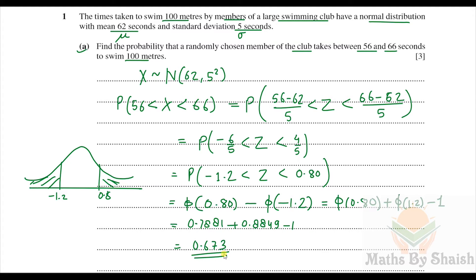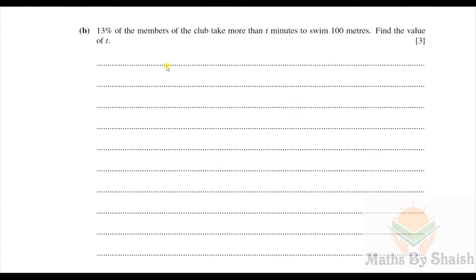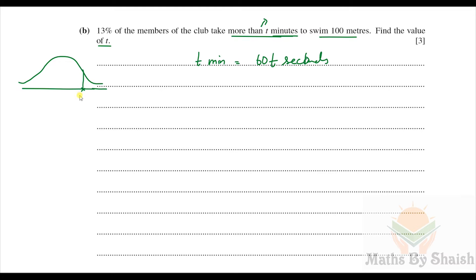Part (b): 13% of members take more than t minutes to swim 100 meters. We convert t minutes to 60t seconds, since the distribution is given in seconds. Since 13% take more than 60t seconds, this means 87% take less than 60t seconds — placing 60t to the right of the mean.